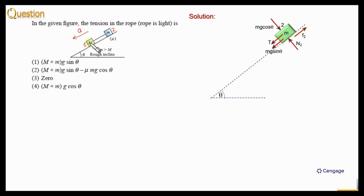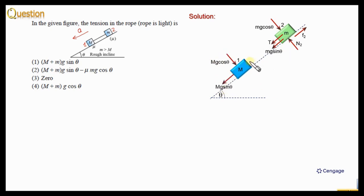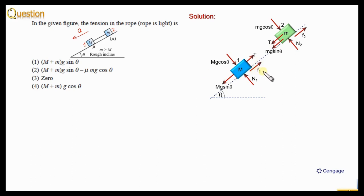Now we can consider block number one. Similarly, we can make the components of weight parallel and perpendicular to the inclined plane. The normal reaction and tension force will be in the upward direction. This block is also sliding down, so the friction force will be in the upward direction and kinetic in nature.